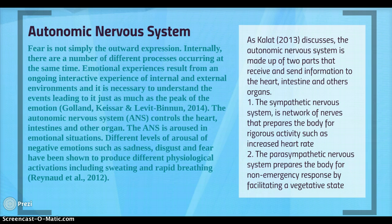The autonomic nervous system is made up of two parts that receive and send information to the heart, intestines, and other organs. The first is the sympathetic nervous system, which prepares the body for rigorous activity such as an increased heart rate. The second is the parasympathetic nervous system, which prepares the body for non-emergency response by facilitating a vegetative state.